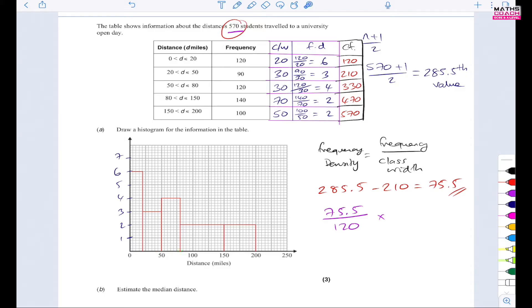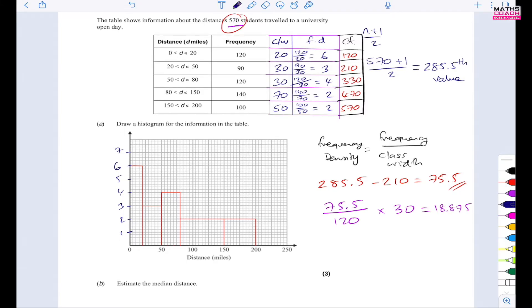And then what you do is you times this by the class width, okay? So the class width was from 50 to 80, as you are told here as well, okay? So 50 to 80, the class width, and it's here too. So 30, so you times this by 30. And what answer do you get? You get 18.875. So what do you do once you have this value? Well, you know that you left off from the 50, so you're going to now add that 18.875. So you're going to do 50 plus 18.875, and that gives you 68.875. So that's your median distance.